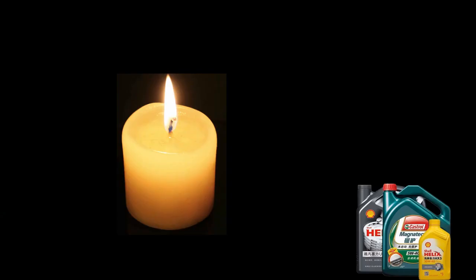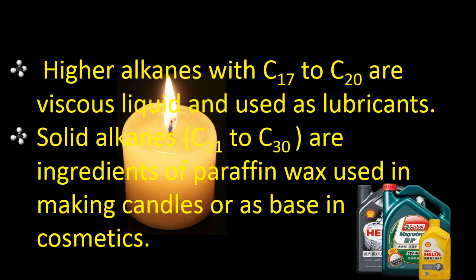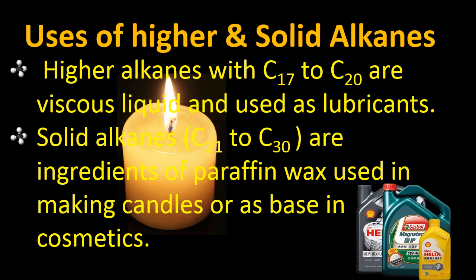Now let's look at the uses of higher alkanes. From carbon number 1 to carbon number 5, we are talking about gases. These lower alkanes present in gaseous form are easily combustible and can easily undergo burning, which is why most of them are used as fuel. As the number of carbon atoms increases, we refer to them as higher alkanes. Higher alkanes with carbon numbers 17 to 20 are viscous liquids and are used as lubricants.